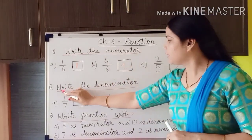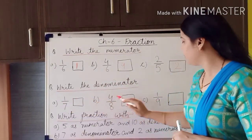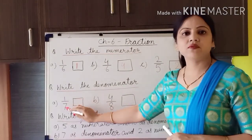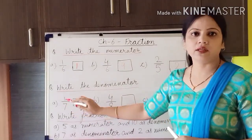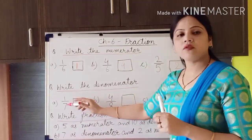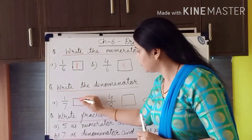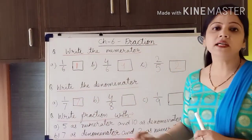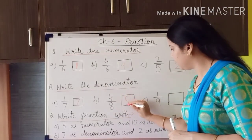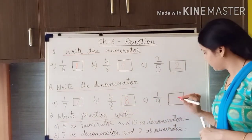The second question is: write the denominator. Again I have given A, B, and C. For A, 1 by 7 — the denominator is always at the bottom, so 7 is the denominator. For B, 4 by 8 — the denominator is 8. For C, 1 by 9 — the denominator is 9.